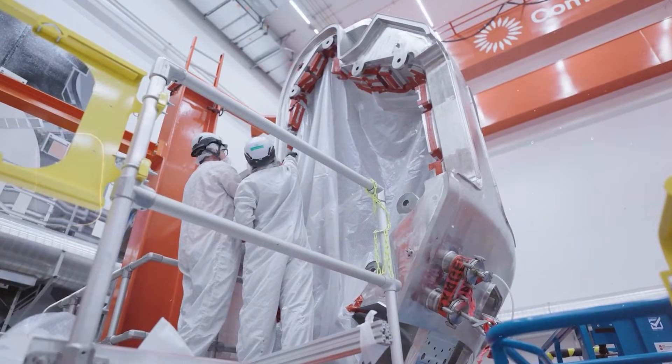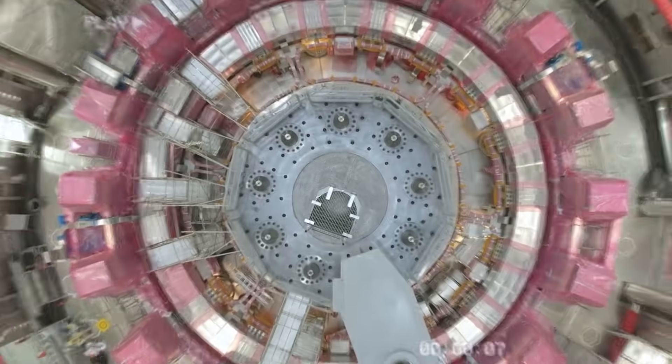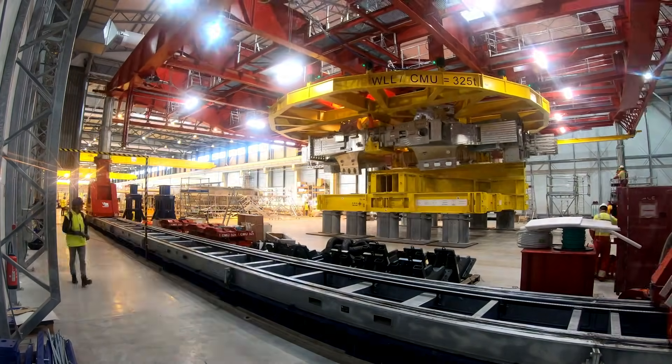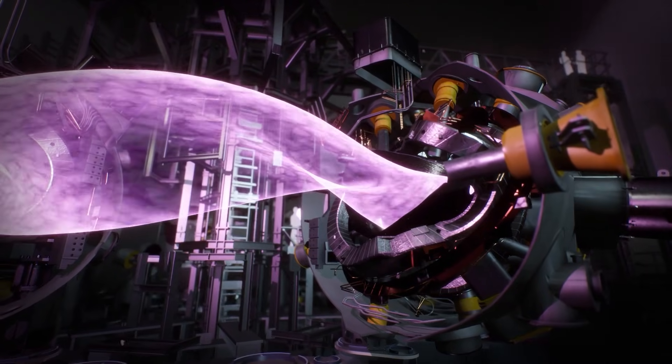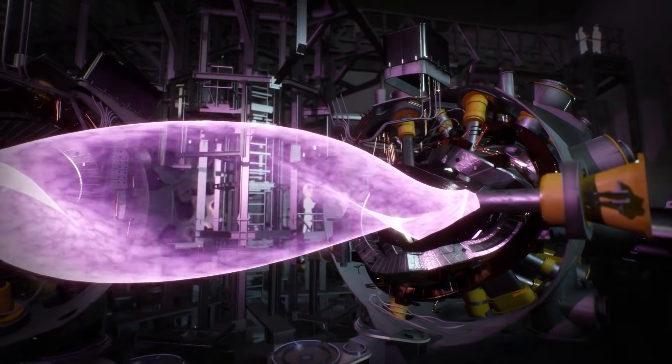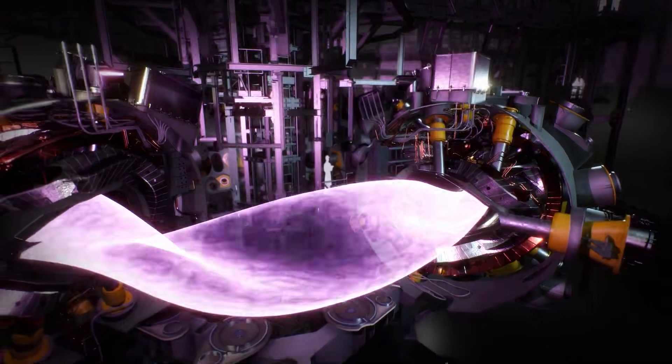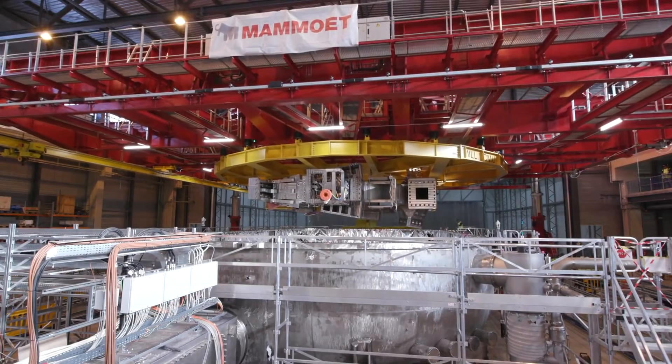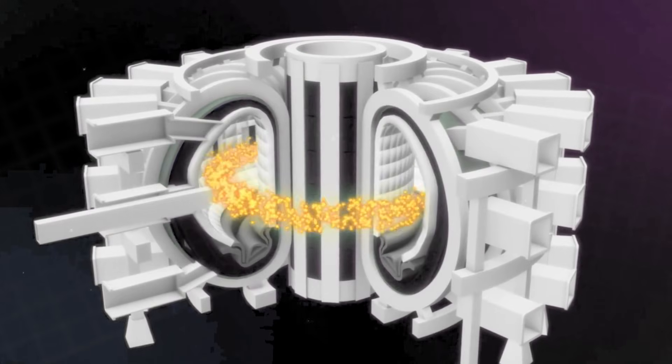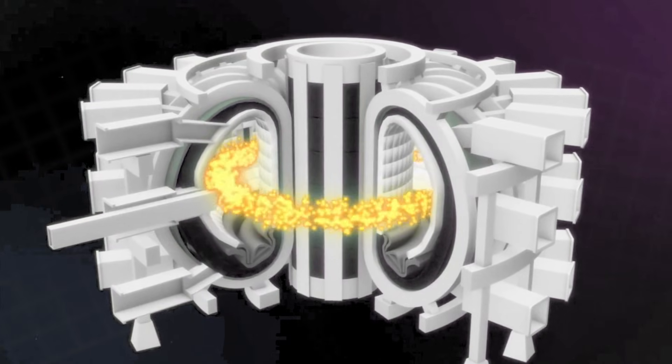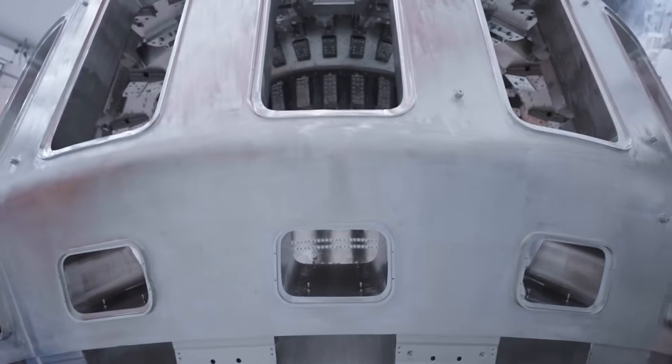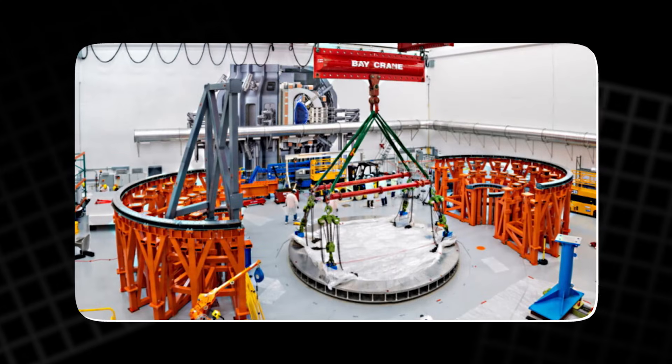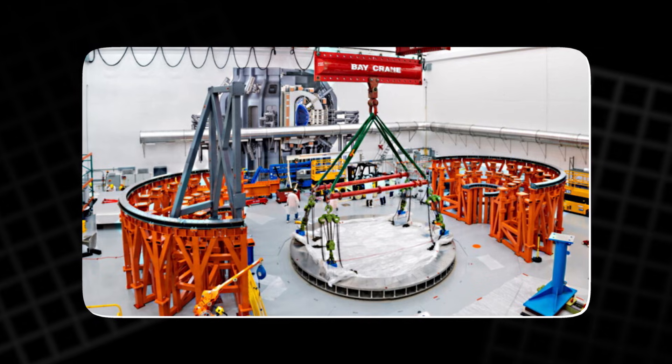The target performance is a fusion gain factor Q greater than 1, and the design goal is Q10. For context, the JET tokamak in the UK achieved about Q equals 0.67, and ITER also aims for Q10, but not until the mid-2030s. Spark's schedule has been far more aggressive. Construction began in 2023 in Devens, Massachusetts. Plans have pointed to assembly around 2025, first plasma around 2026, and net energy level tests after that. Cost is part of the pitch too. ITER's total price is often described as north of $50 billion, while Spark's program has been framed as under $3 billion, largely private.